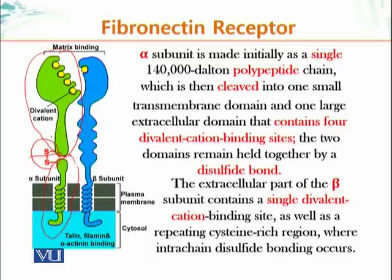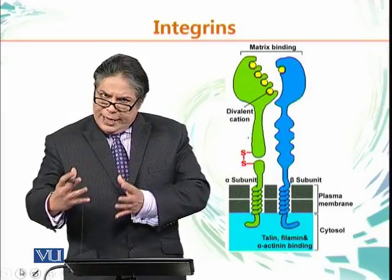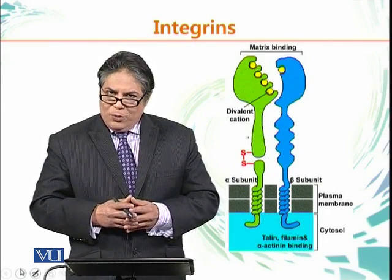The extracellular part of the beta subunit contains a single divalent cation binding site, whereas the alpha subunit has four of them. The alpha subunit is thought to play a major role in binding the extracellular material, while the cytoplasmic domain of the beta subunit interacts with molecules in the cytoplasm that regulate the affinity and properties of the whole alpha-beta integrin dimer complex. We will talk about how integrins are regulated and explore more features of integrin molecules in a later module.